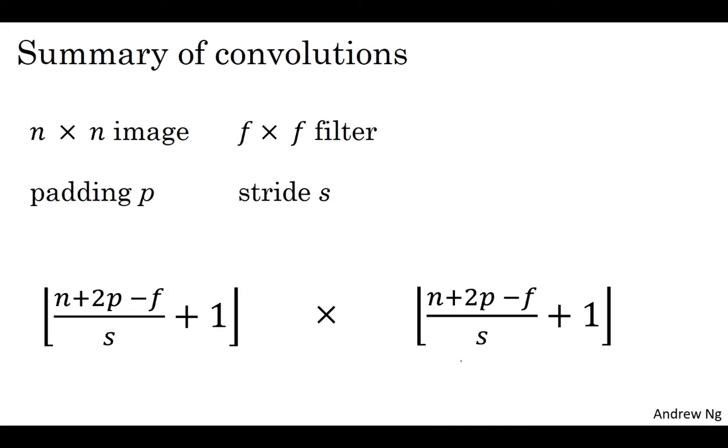And it is nice when you can choose all of these numbers so that that is an integer, although sometimes you don't have to do that and rounding down is just fine as well. But please feel free to work through a few examples of values of n, f, p, and s for yourself to convince yourself if you want that this formula is correct for the output size.